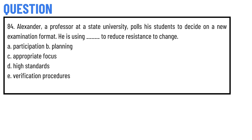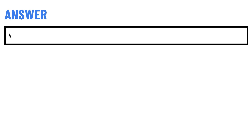Today's question: Alexander, a professor at a state university, calls his student to decide on a new examination format he is using to reduce resistance to change. Option A: participation. Option B: planning. Option C: appropriate focus. Option D: high standards. Option E: verification procedures. The correct answer is option A.